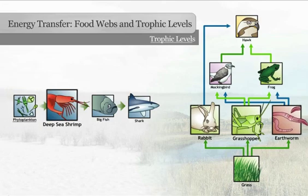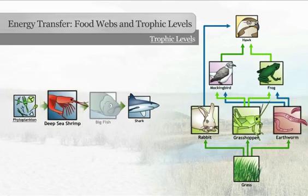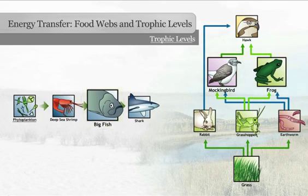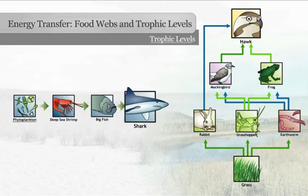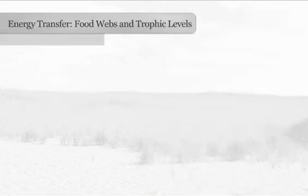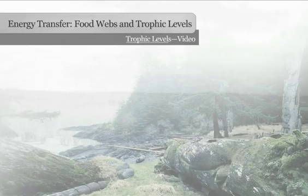Primary consumers are trophic level 2. Secondary consumers are level 3. Tertiary consumers are level 4, and quaternary consumers are level 5. Food chains and food webs usually don't include more than 5 levels.